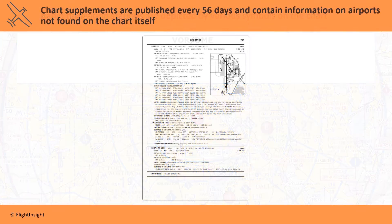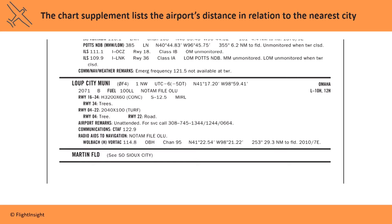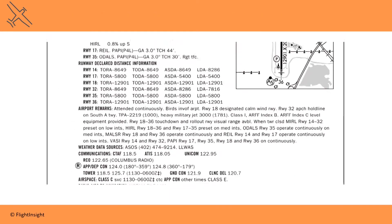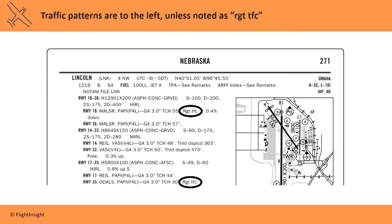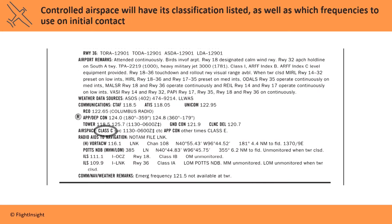Charts contain a lot of information, but they can't fit everything we need to know about the flight environment on them. Chart supplements are published to include additional information about airports and airspace, and are published every 56 days. The chart supplement lists each airport's distance from the nearest city. Loop City Municipal Airport is a mile northwest of the city. All airport traffic patterns use left-hand turns as standard, unless the supplement notes that right turns are to be made. The runways that use right traffic are noted in the supplement. Controlled airspace will have its classification listed, as well as which frequencies to use on initial contact.